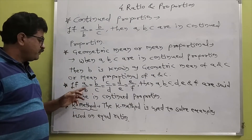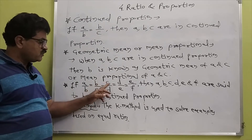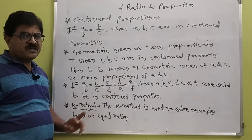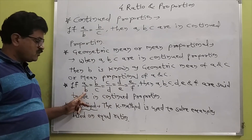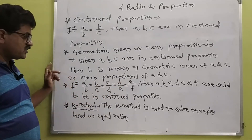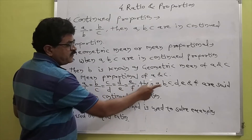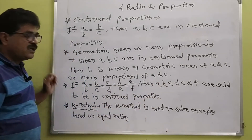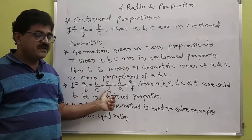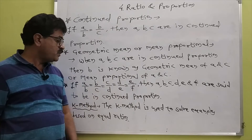If A upon B is equal to B upon C is equal to C upon D is equal to D upon E, then A, B, C, D and E are said to be in continued proportion.